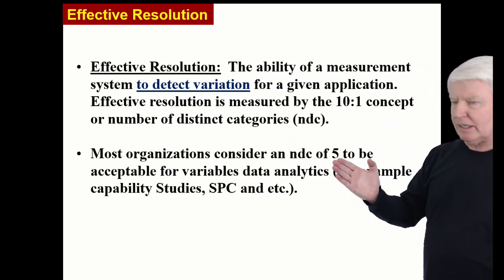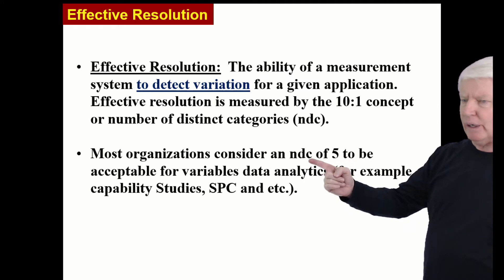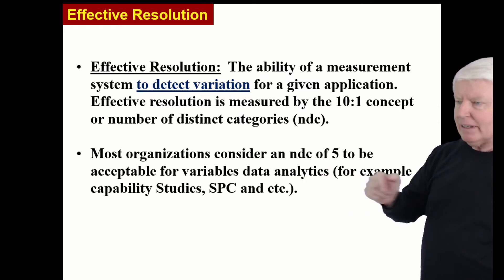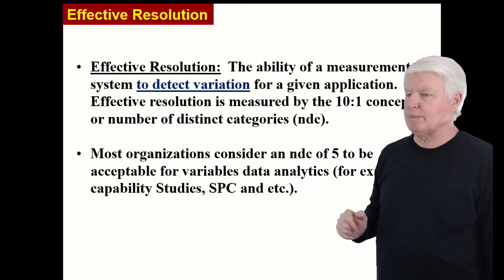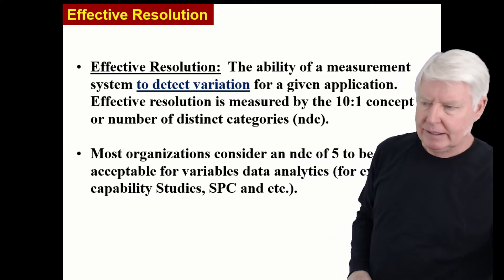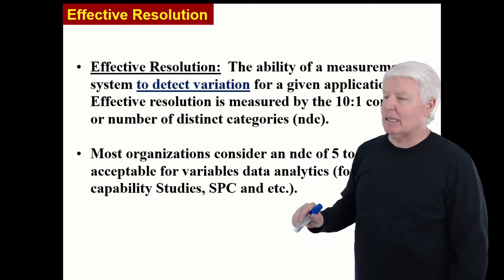If you use the 10 to 1 rule, you're going to get good effective resolution on those diagrams. So that's what we're looking at. You can use the 10 to 1 or NDC of five or better. Most organizations consider an NDC or number of distinct categories of five to be acceptable for variables data analytics. For example, capability studies, SPC, and etc. And so let's dig into this a little more.